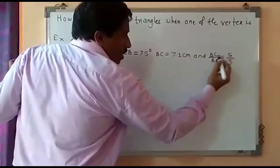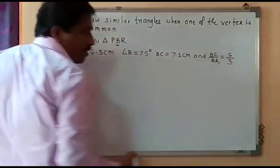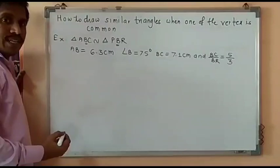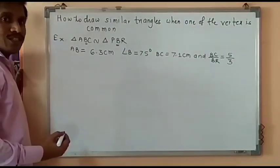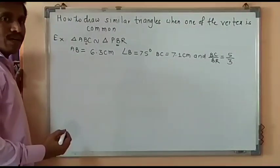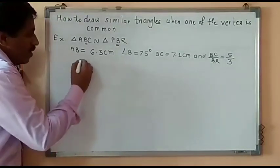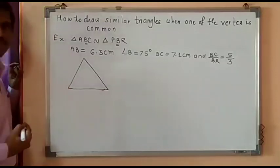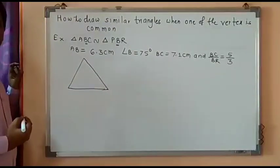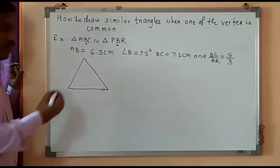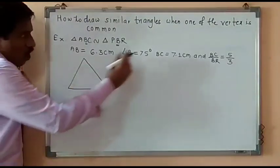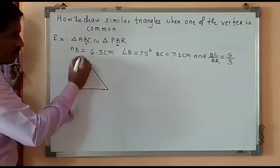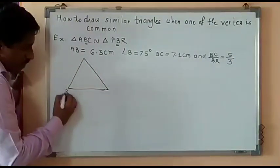Since BC is a multiple of 5 and BR is a multiple of 3, we have decided that triangle ABC is the larger triangle and triangle PBR is the smaller triangle. First, we will draw a rough figure. Always keep the common vertex at the left-hand side. So, this vertex is B.